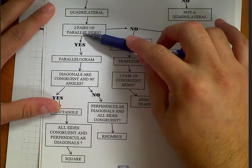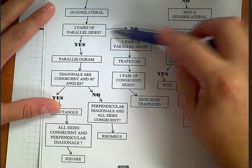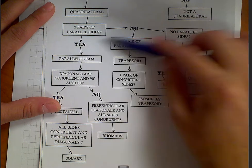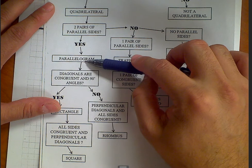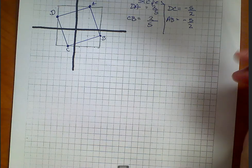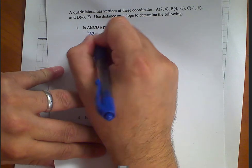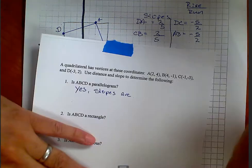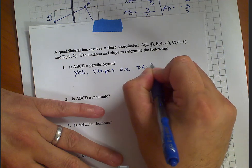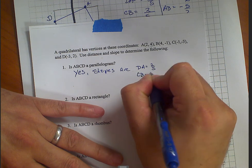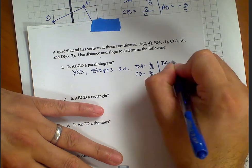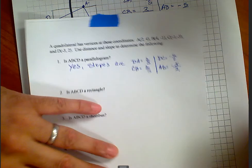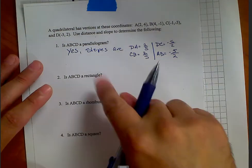According to the checklist, DA and CB are parallel, and DC and AB are parallel — two pairs of parallel sides. So yes, it is a parallelogram. Recording the slopes: DA = 2/5, CB = 2/5, DC = -5/2, AB = -5/2. Yes, it's a parallelogram because two pairs of opposite sides have equal slopes.